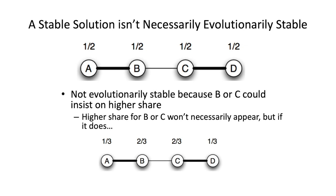We talked about stable outcomes, and the one-half/one-half isn't necessarily evolutionarily stable. It's stable and it's a Nash equilibrium, but we also showed the two-thirds/one-third option. The one-half/one-half option could persist forever, but if at any point a higher share for B or C appeared, we could eventually evolve to the one-third/two-third/two-third/one-third option, which is the balance solution we're going to talk about right now.